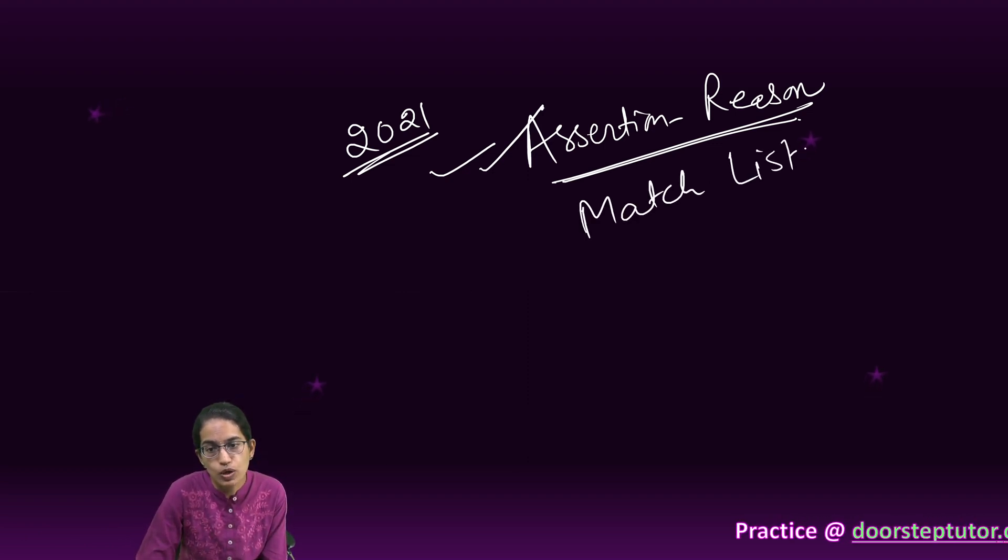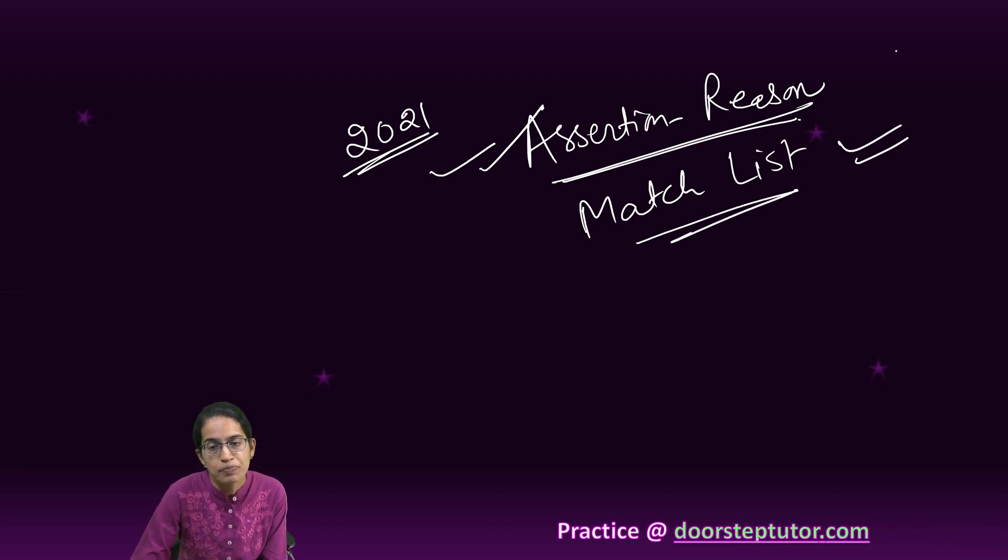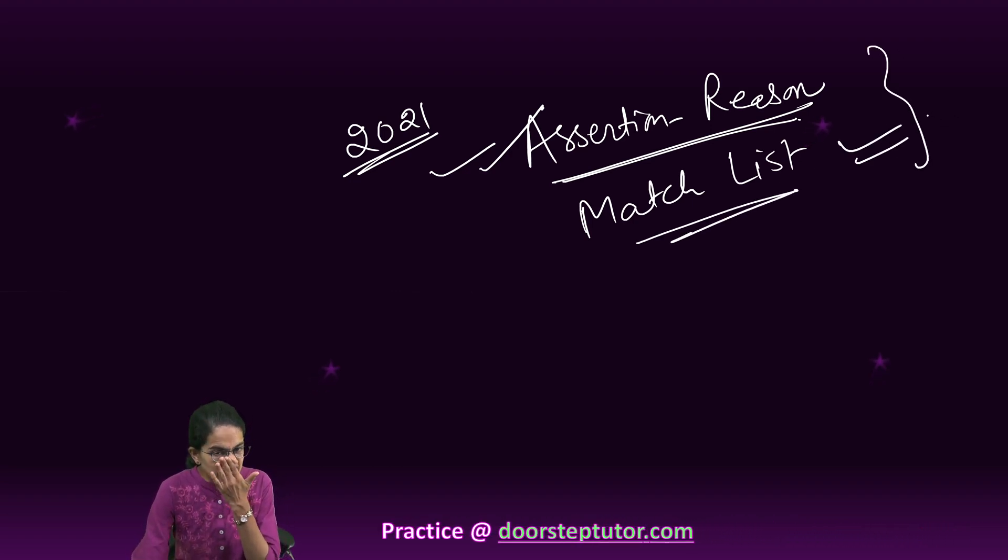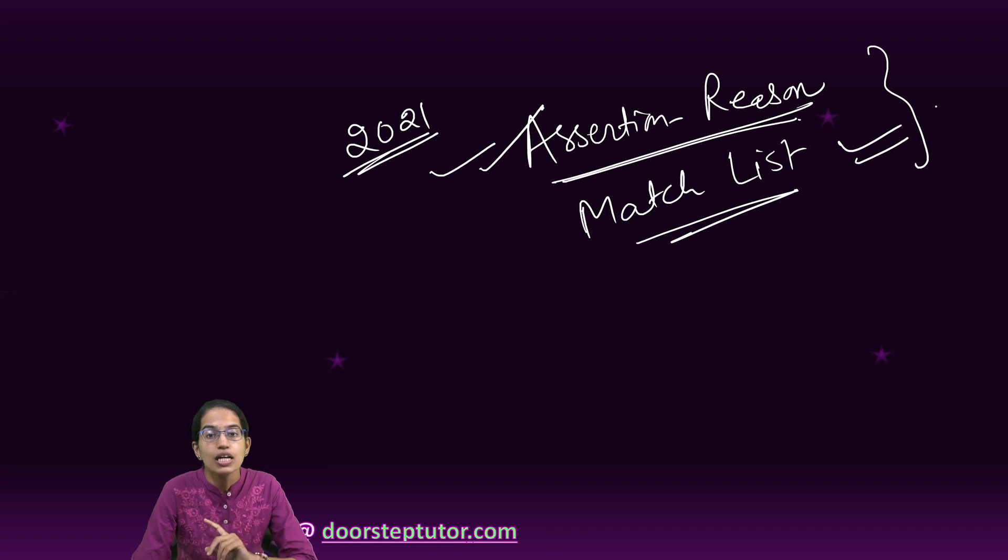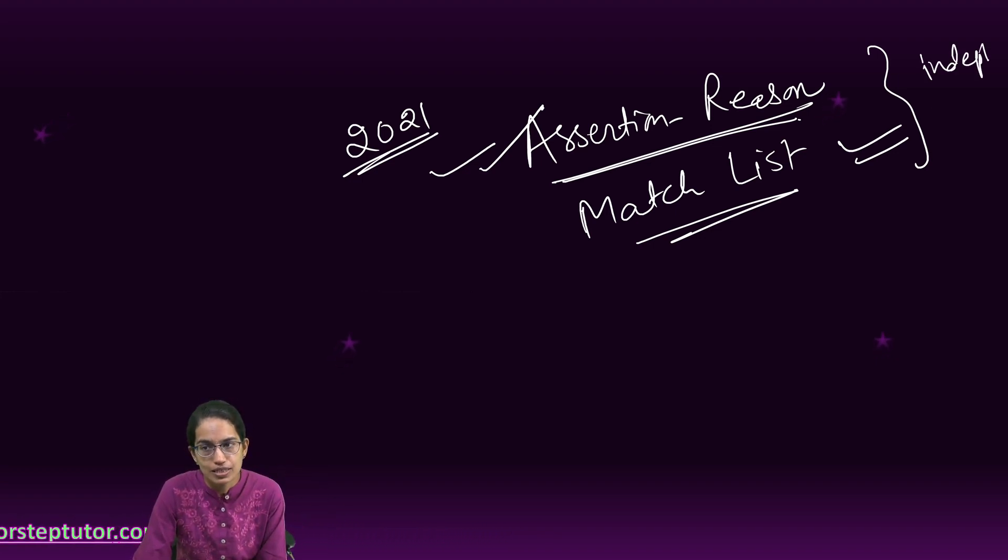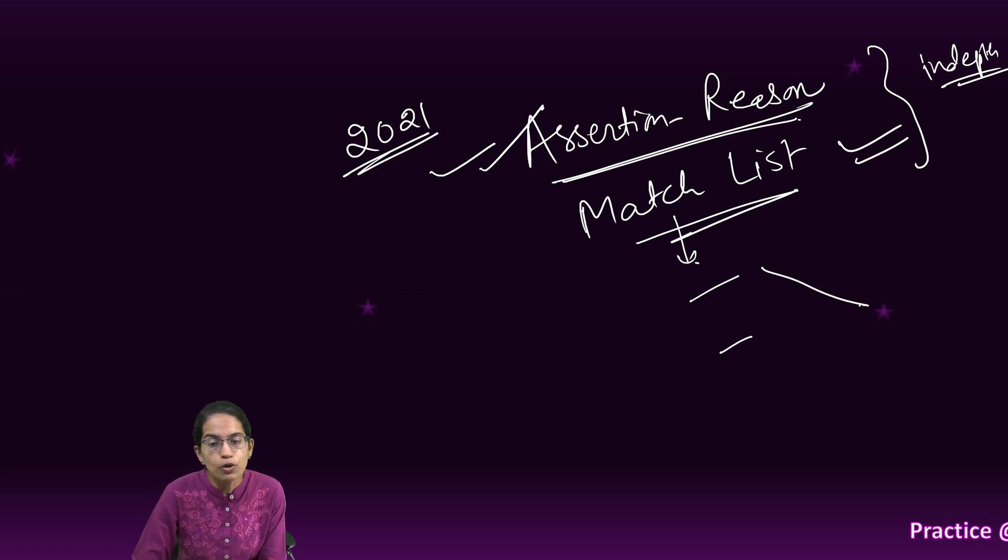Also, match list questions were extremely high in number. Both of these question types indicate that superficial reading is not a good solution. You need to have in-depth understanding. When you have match list, let's say you know what is acrocentric but you don't know what is telocentric. If you match the acrocentric correctly but don't know telocentric, then you are stuck.